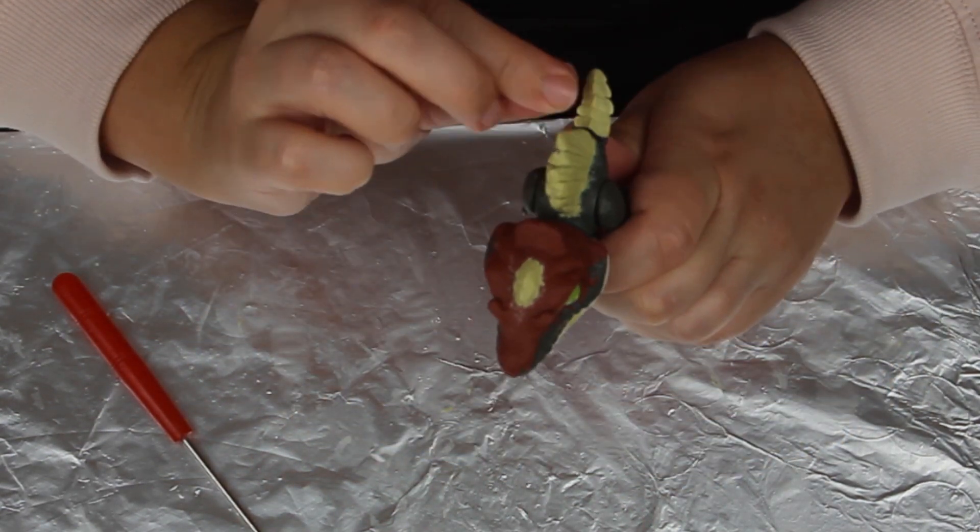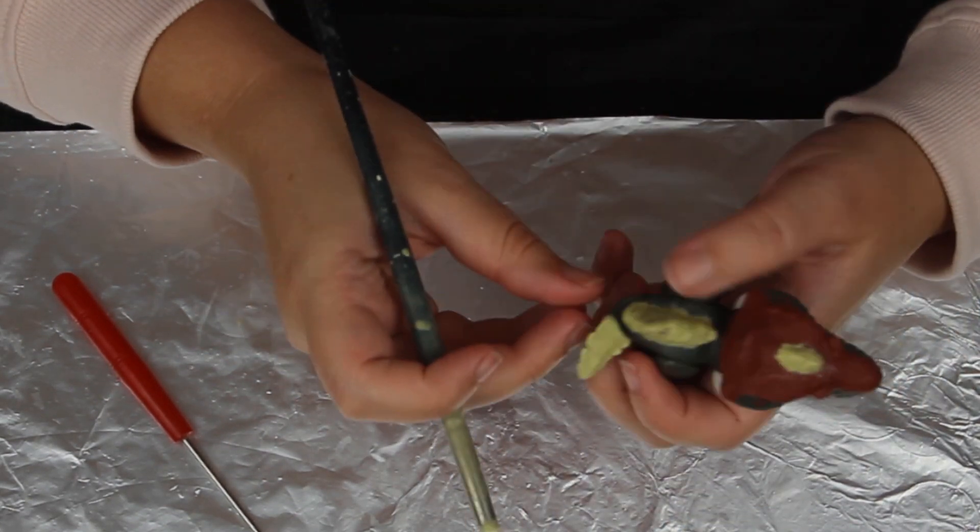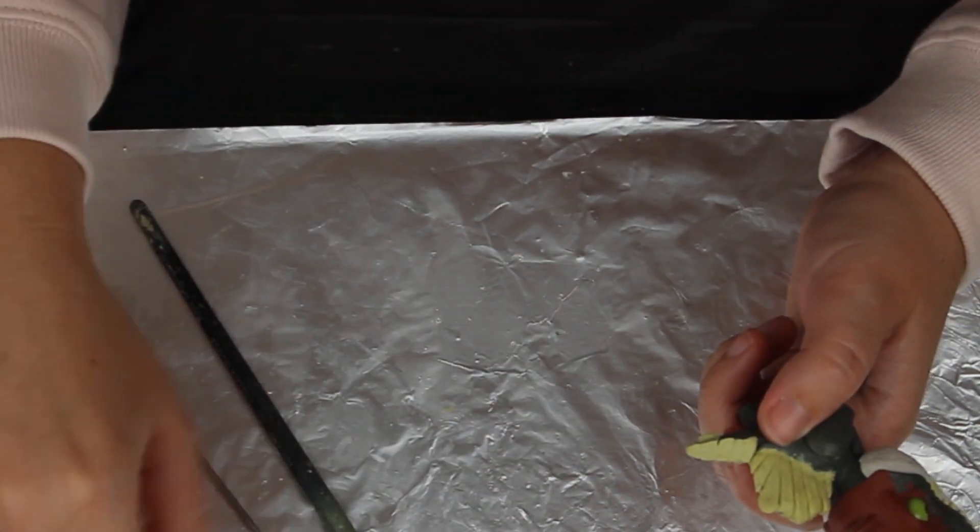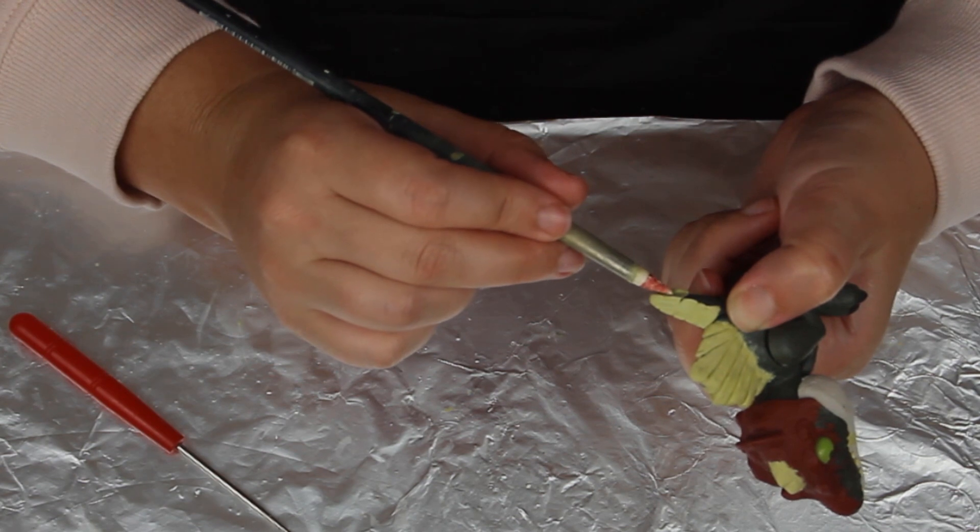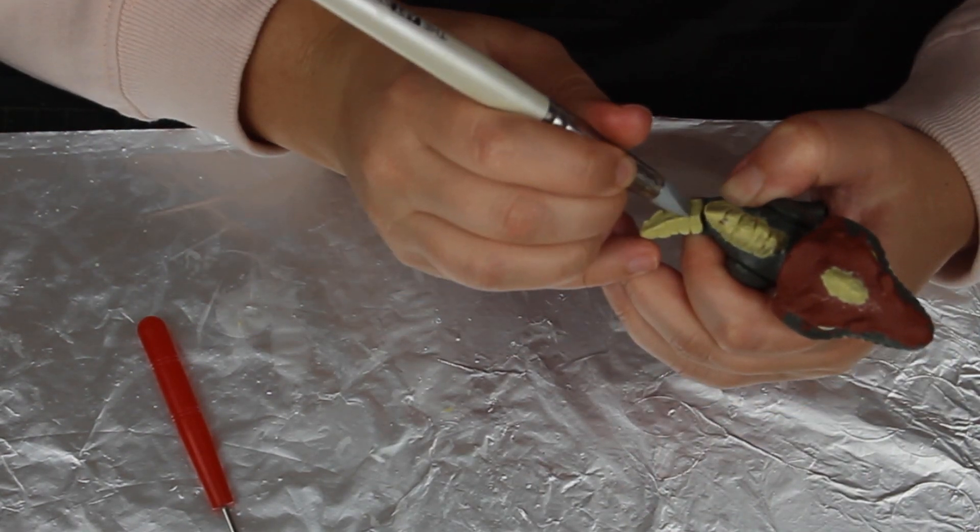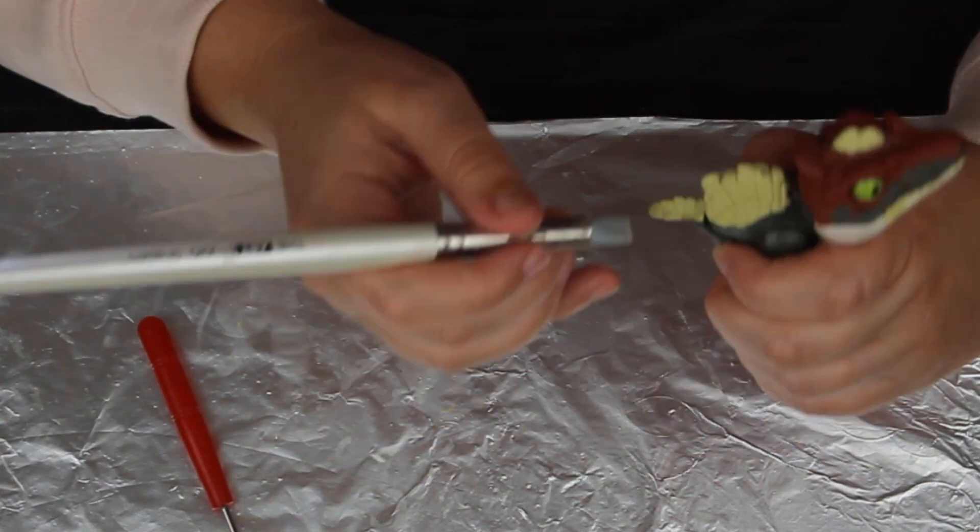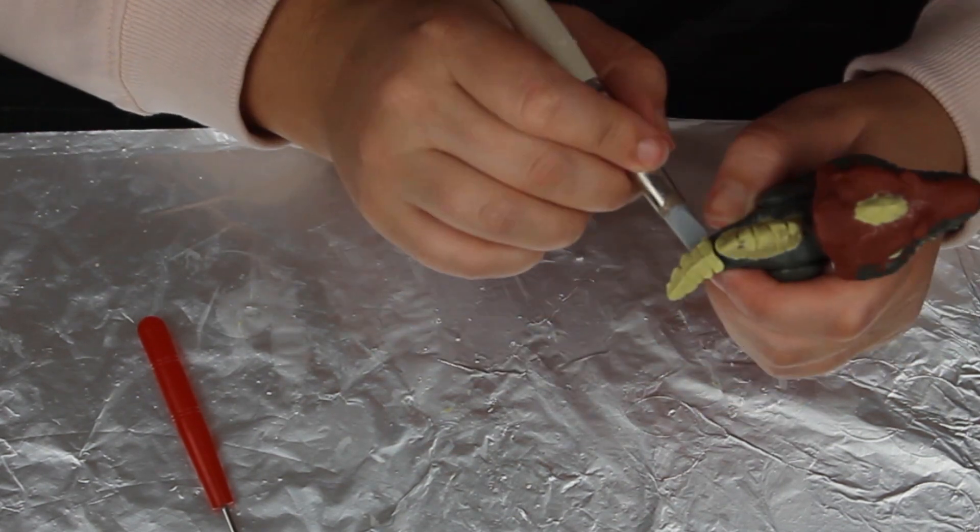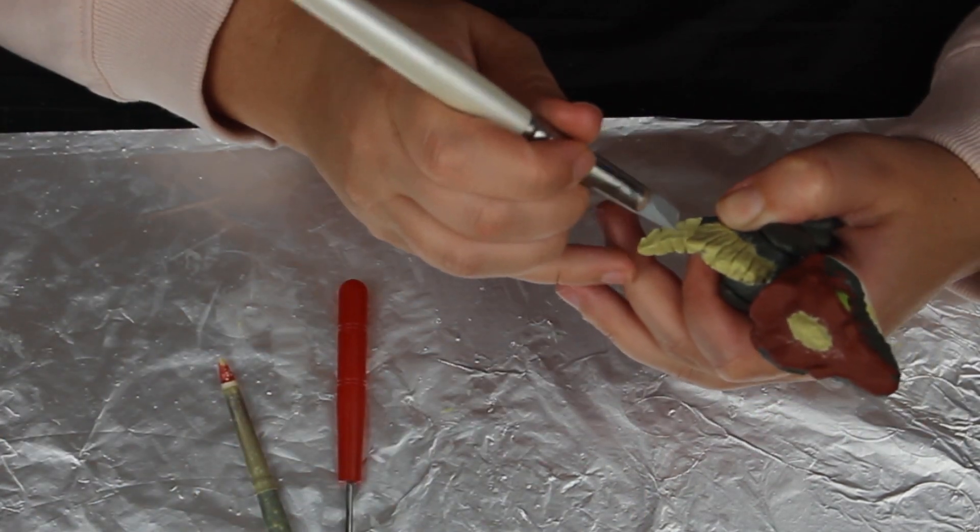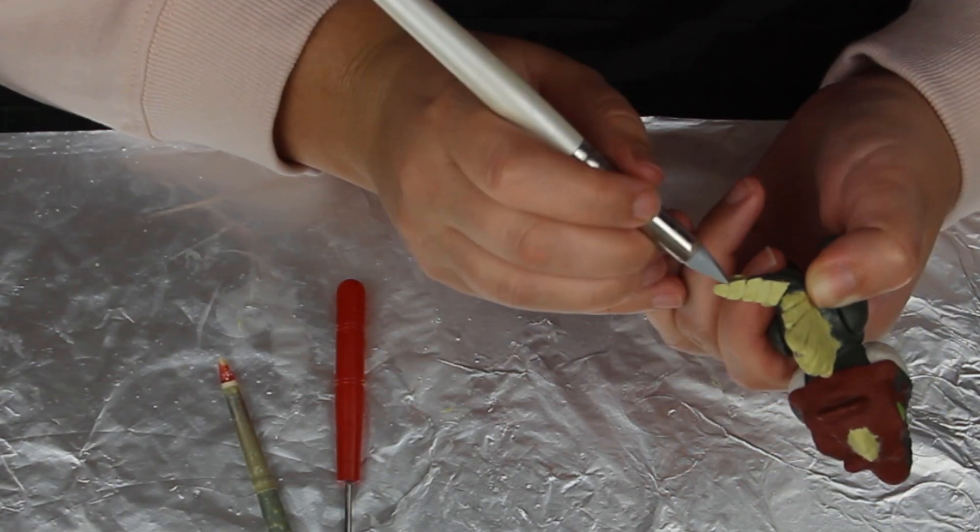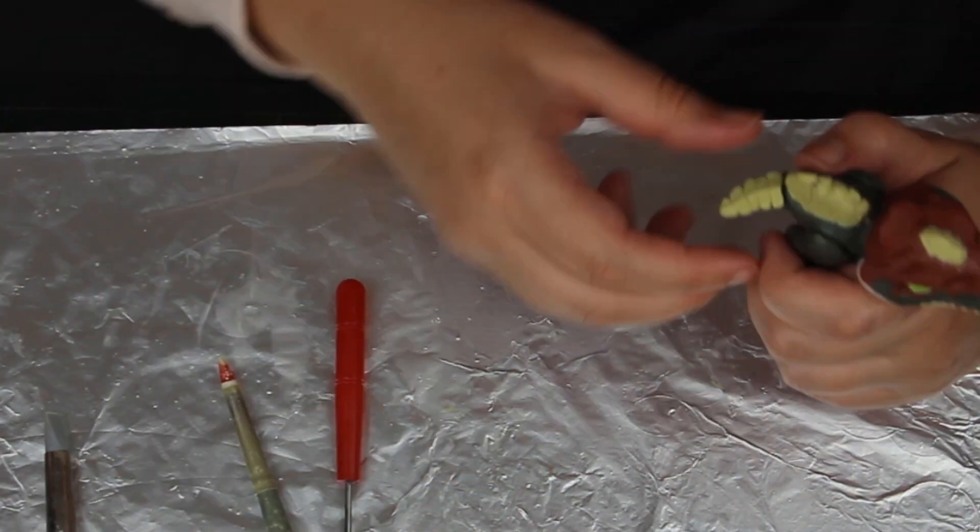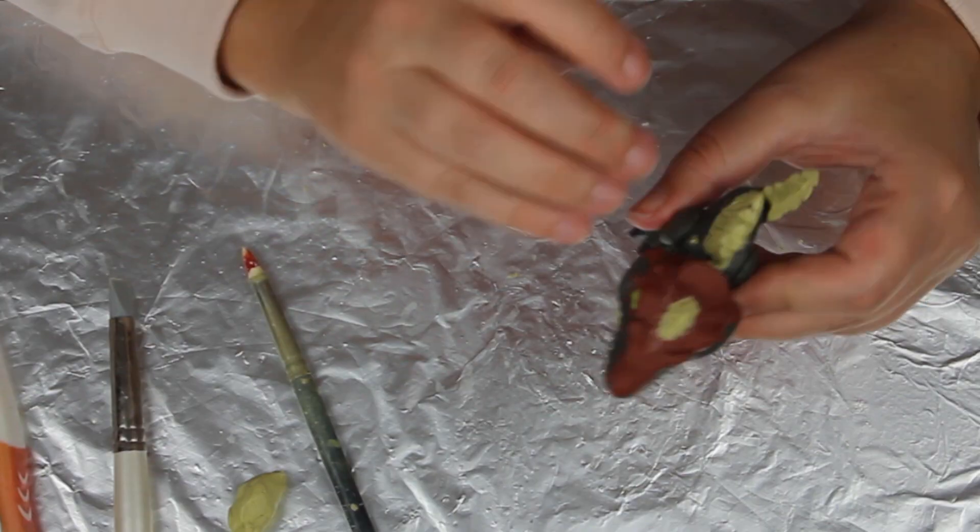So continuing on with the sculpting now, tail almost done. Now I'm using my silicon tool here just to blend in the edges a bit more, since when I smoothed them out they sort of smoothed over the edges a bit. So I'm recarving them back in and rounding them off again. A lot of back and forth when you're sculpting, a lot of back and forth. There's the toothbrush again to give it a good texture.